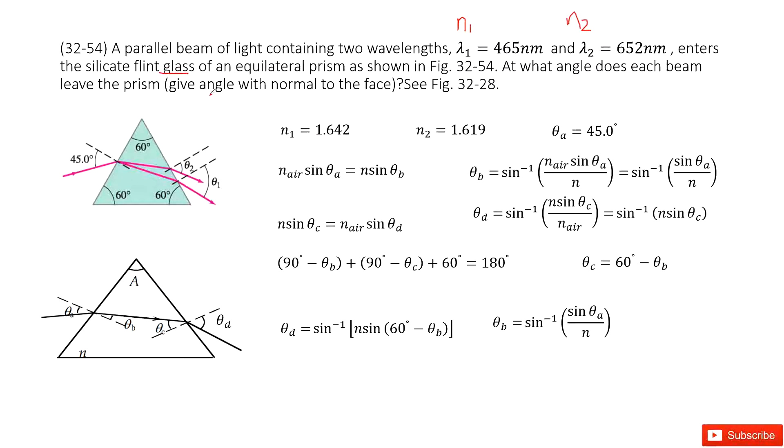Now we know it enters the equilateral glass. Equilateral glass looks like this one. That means this angle is 60 degrees. Each angle is 60 degrees. At what angle does each beam leave this object?